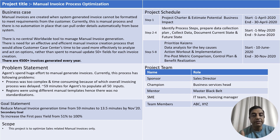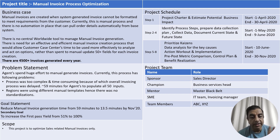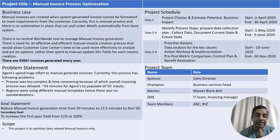The first thing the team did was to create a project charter. The project charter has six elements: the first is the business case, the second is the problem statement, the third is the goal statement, the fourth is the scope of the project, the fifth is the project schedule, and the sixth is the team charter.